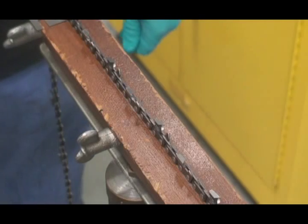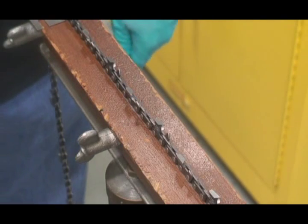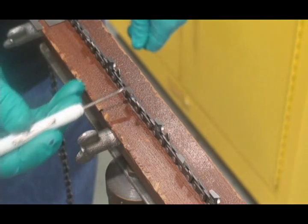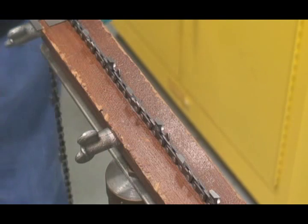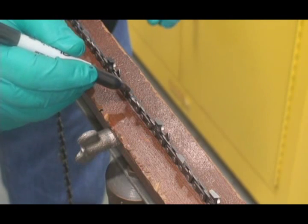To begin sharpening your chain using the Carlton file plate, start with either the right or left hand cutters. Make a small mark on the first cutter to indicate the first cutter filed.